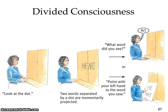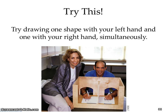Looking at divided consciousness, here's an example: look at the dot — two words separated by the dot are momentarily projected. What word do you see? She saw 'art.' Now if you look at it another way — point with your left hand to the word you saw — she would point a little bit differently. This is divided consciousness.